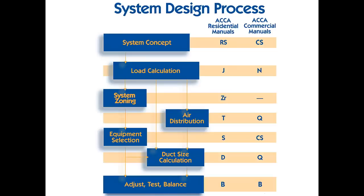In an ideal world, an HVAC system designer would follow the full ACCA design process, which you can see here in the diagram. The boxes on the left are the general steps: system concept, load calculations, system zoning, air distribution, equipment selection, duct sizing calculation, and adjust, test and balance. The boxes in the middle are the corresponding residential ACCA manuals, and on the right column are the corresponding commercial ACCA manuals. For this introductory video series, we'll be focusing on the load calculation, which is this video; the equipment selection, which is the next video; and duct sizing, the third video. These are the core steps for proper HVAC design, and not surprisingly, the minimum code requirements.